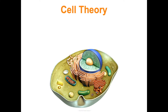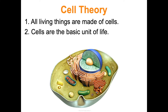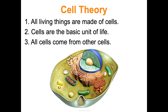Cell theory: these are three principles we know to be true about cells. One, all living things are made of cells. Two, cells are the basic unit of life. And three, all cells come from other cells. In this concept, we're really going to zoom in on numbers one and two. Number three will come up again in concept three — we'll have a whole concept on mitosis, the cell cycle, and how cells come from other cells.